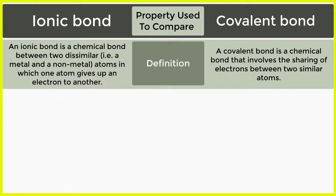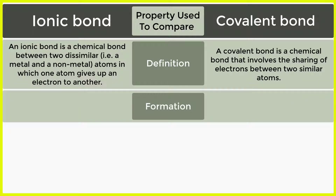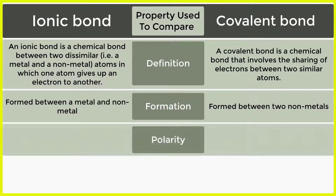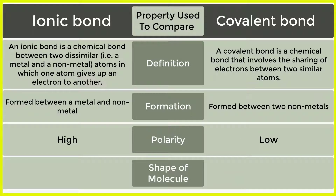Formation — Ionic bond: formed between a metal and non-metal. Formation — Covalent bond: formed between two non-metals. Polarity — Ionic bond: high polarity. Covalent bond: low polarity.